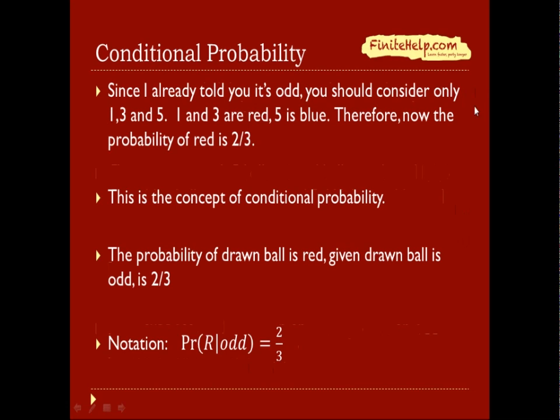Since I already told you it's odd, now you should only consider 1, 3, and 5 being in the possibility of balls that can be drawn. So 1 and 3 are red, and 5 is blue. So now there are 2 red out of 3, and the probability of drawing a red is 2/3.